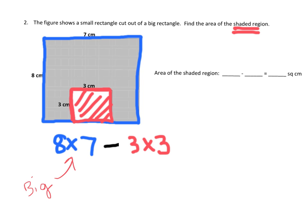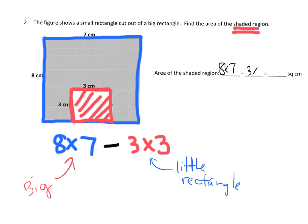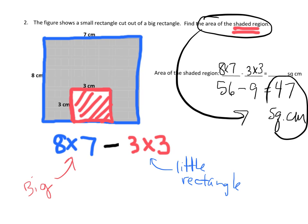The big rectangle is shaded, and this is the little rectangle that isn't shaded — we need to subtract it out. The big rectangle is 8 times 7, so 8 times 7 gives us 56. Then 3 times 3 gives us 9. So the answer is 56 minus 9, which equals 47 square centimeters. The area of the shaded region is 47 square centimeters.